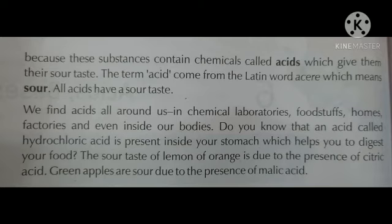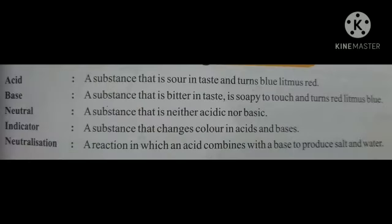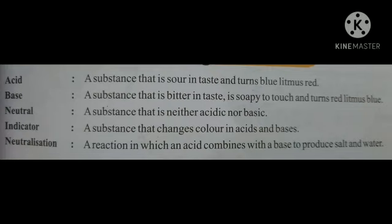Children, read this topic from your book. Now for today's work, do these definitions in your notebook. Acid: a substance that is sour in taste and turns blue litmus red. Base: a substance that is bitter in taste, soapy to touch, and turns red litmus blue. Neutral: a substance that is neither acidic nor basic. Indicator: a substance that changes color in acids and bases. Neutralization: a reaction in which an acid combines with a base to produce salt and water. Thank you.